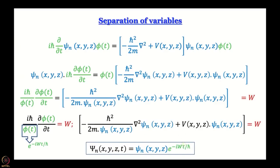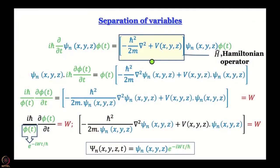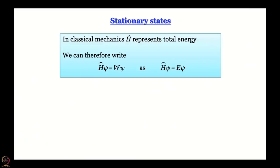What we have found so far is the general form of the time-dependent part of the wave function, which we discussed in the previous module. An important point is that the operator in the space-dependent part is the Hamiltonian operator, already known in classical mechanics as the total energy operator. So the equation Ĥψ = Wψ can be written as Ĥψ = Eψ, replacing W with the energy E.